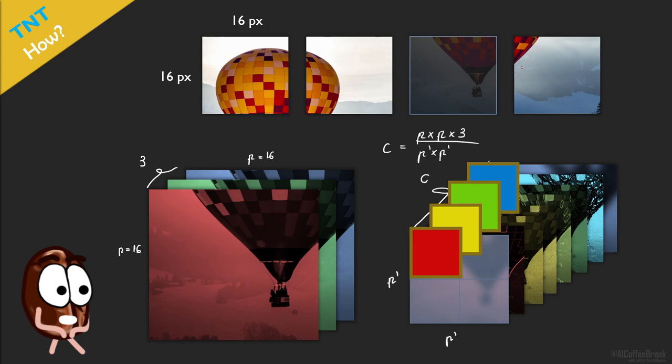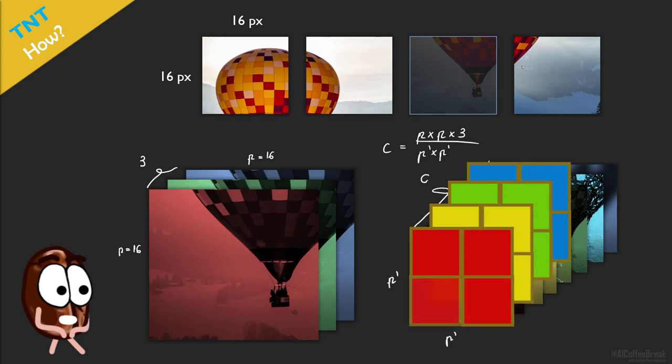Then, if p prime equals 2, this new tensor can be regarded as a tensor of 4 pixels, which are now super pixels, because they already contain information about their neighboring pixels. Remember, we reduced from p to p prime, and p is bigger than p prime.